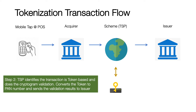Once the scheme receives the transaction, it knows this is not a normal card transaction — it is a token-based transaction, based on the token BIN range, etc. Once the TSP identifies it as a token-based transaction, it actually does the cryptogram validation using the card profile issued to that particular token. So here the scheme is responsible for all cryptogram validations using HSM. Once the transaction is validated, the scheme converts the token number to a PAN number, embeds the result of the cryptogram validation, and then sends it to the issuer.